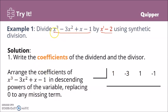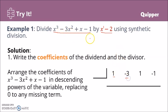Arrange the coefficients of the dividend in descending powers of the variable — that's powers 3, 2, 1, and 0 (the constant term). If there are missing powers, for example if the x² term is absent, we replace it with zero. In this case all powers are complete. The coefficients are: 1 for x³, negative 3 for x², positive 1 for x, and negative 1 for the constant term.